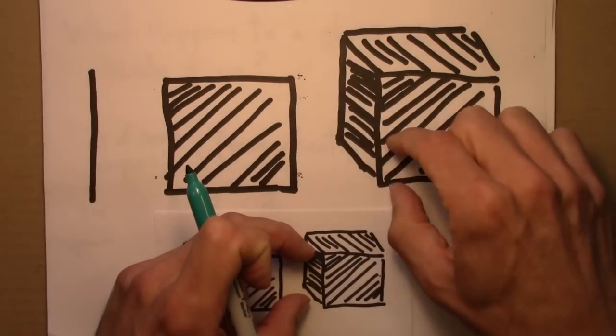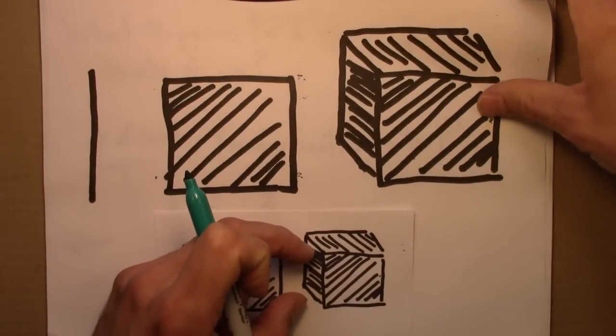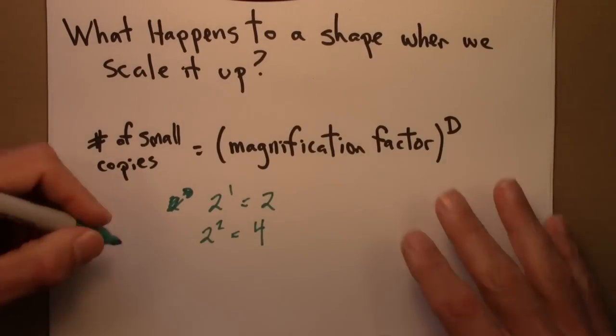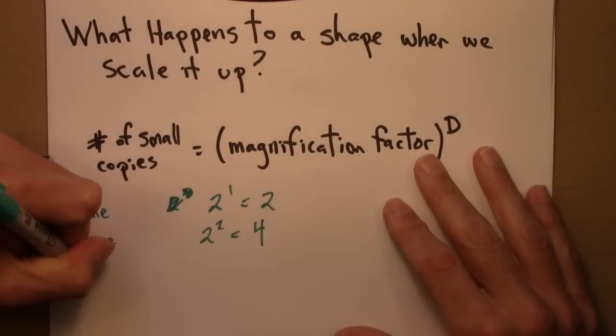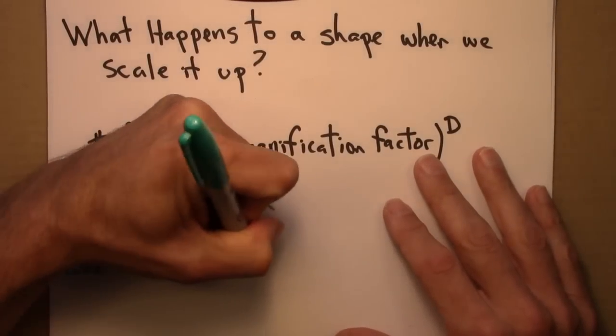You can also picture that one, two, three, four, five, six, seven, eight, these cubes fit in here. So for a cube, we would have two cubed equals eight.